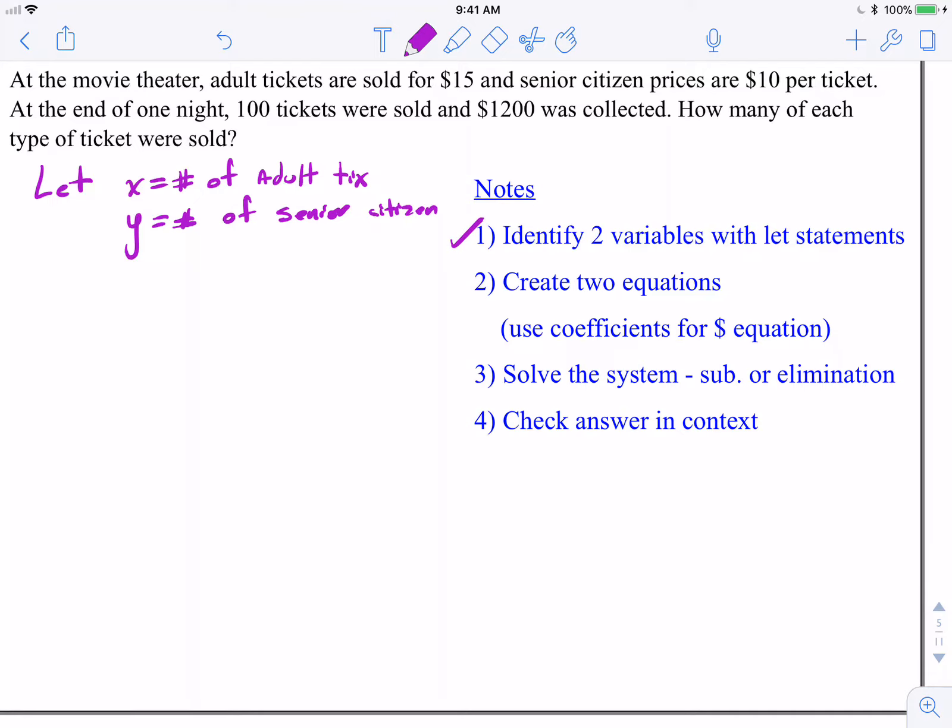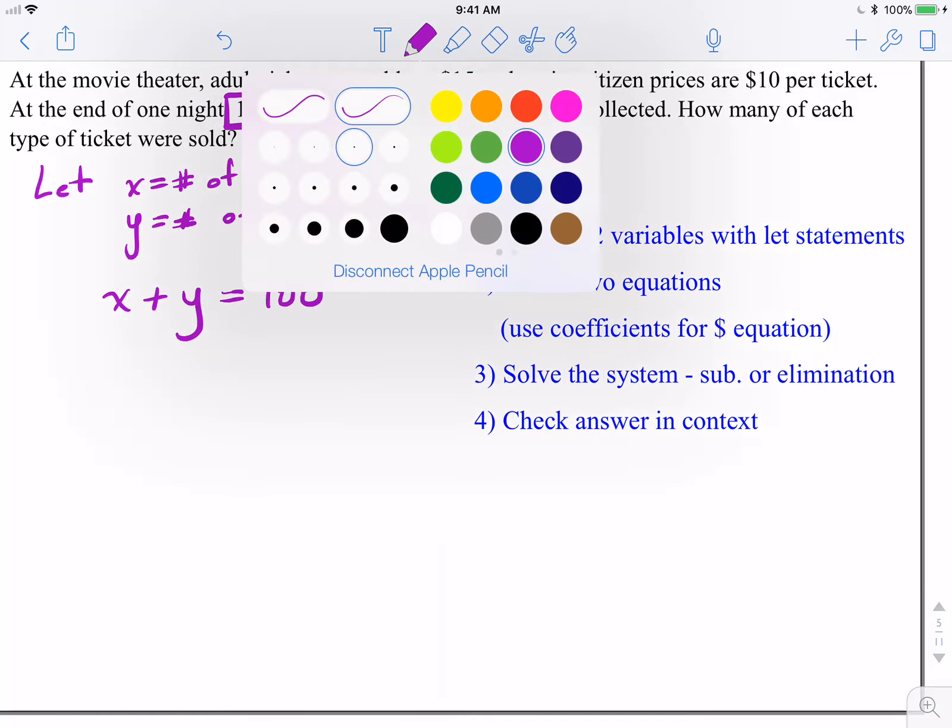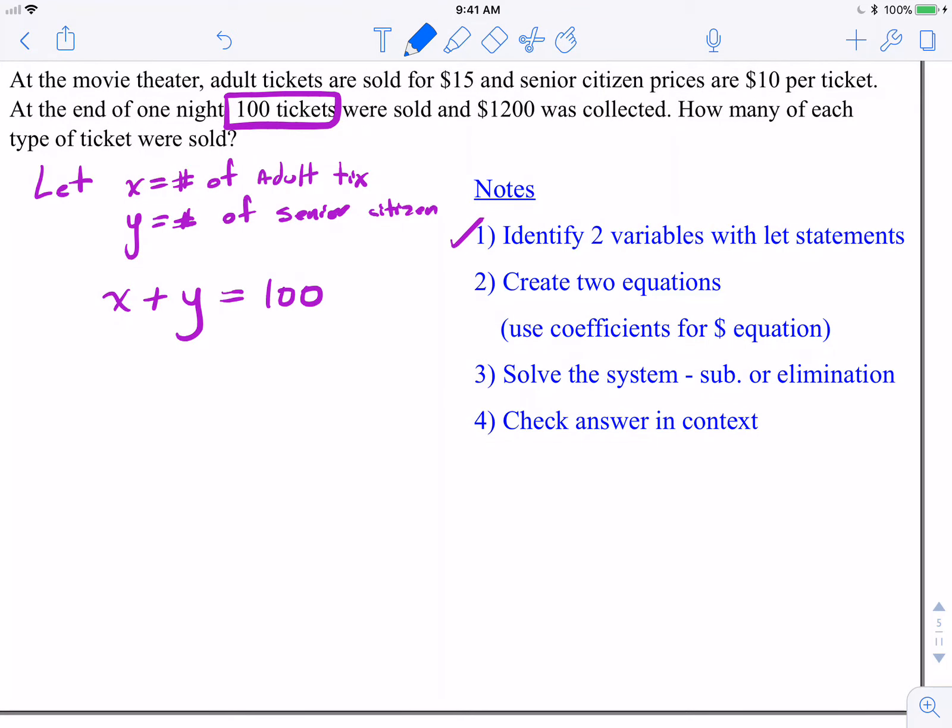Now I'm going to create my two equations, I'm going to start with my number equation. So the fact that 100 tickets were sold, there's only two types. If there's only two types, and there were 100 total tickets, that means if I add the two tickets together, however many there are, whether it's 80 and 20, whether it's 99 and one, if I add them together, I should get 100. Pretty straightforward. Once again, that's because there are only these two options, and I have a grand total amount. No money involved, no coefficients, just straight up, this number plus this number should equal 100.